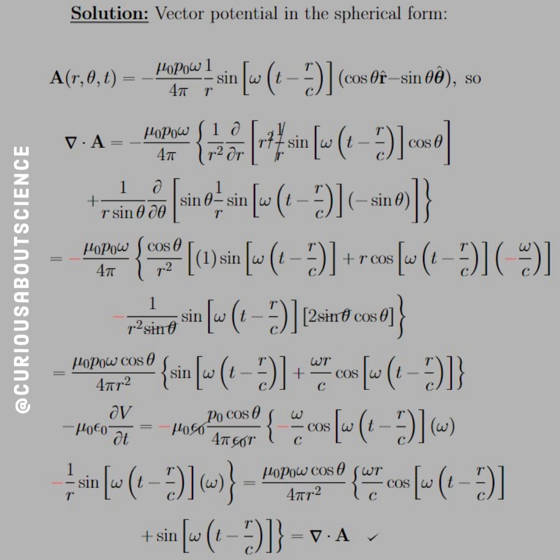then we're left with mu-naught p-naught omega cosine over 4 pi r squared curly bracket sine omega at tr plus omega r over c cosine omega at the retarded time. So now we just have to see if this equals the right-hand side of the condition.